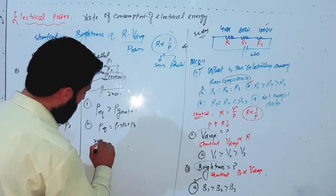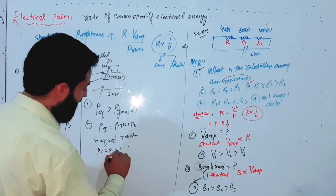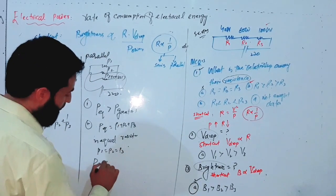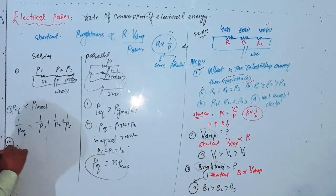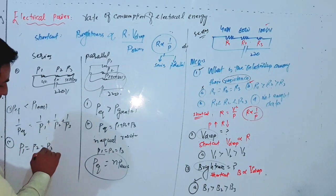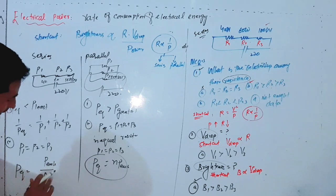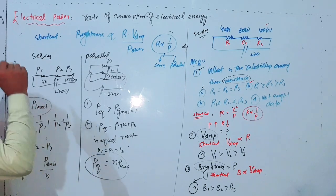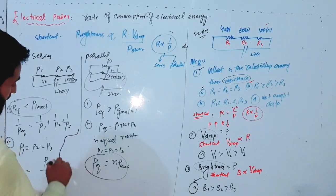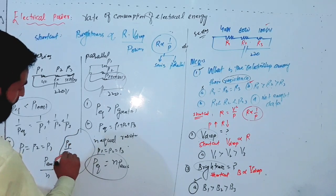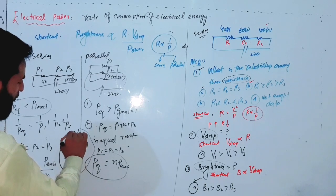If you have N equal resistors each with power P, then in a parallel combination the equivalent power is Np, and in a series combination the equivalent power is P/N. The ratio of parallel power to series power is N²:1. This is the mother formula — an important shortcut to remember.